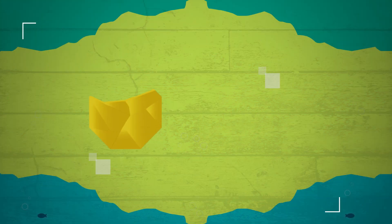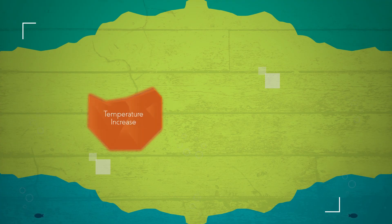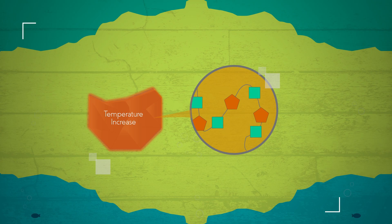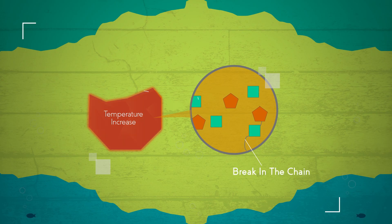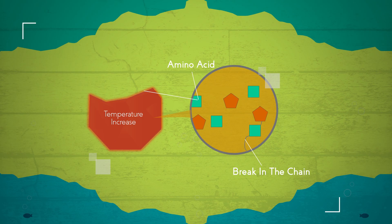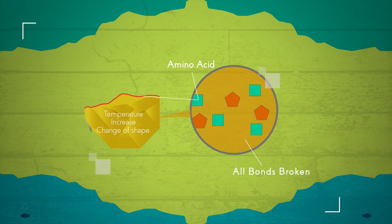Now here comes the chemistry behind this. When temperature increases, the individual amino acids that make up the enzyme vibrate at a higher frequency. This results in the breaking of hydrogen bonds between amino acids and different parts of the protein chain, leading to a change of shape. At even higher temperatures, bonds between individual amino acids called peptide bonds can break, leading the protein to fragment.